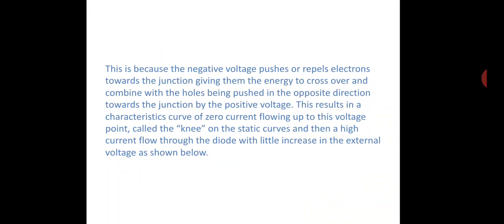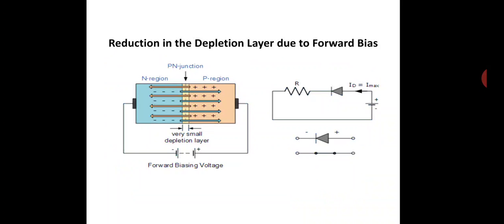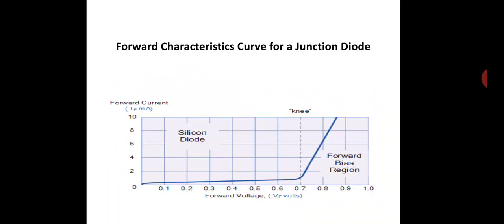This results in a characteristics curve of zero current flowing up to the voltage point, also called the knee point. Initially the depletion layer is present, so only a small current flows from 0.1V up to 0.7V. After 0.7V, the depletion layer is eliminated and charge flows freely from P to N or N to P, and current flows through the diode.